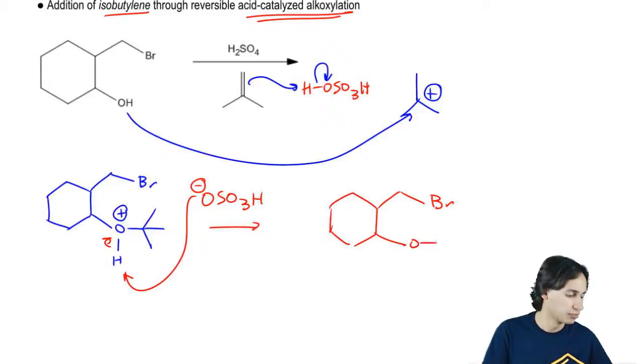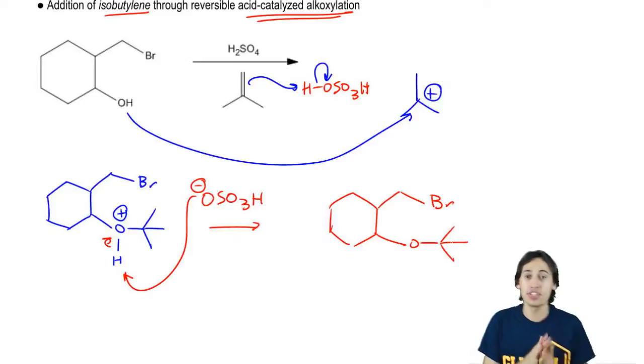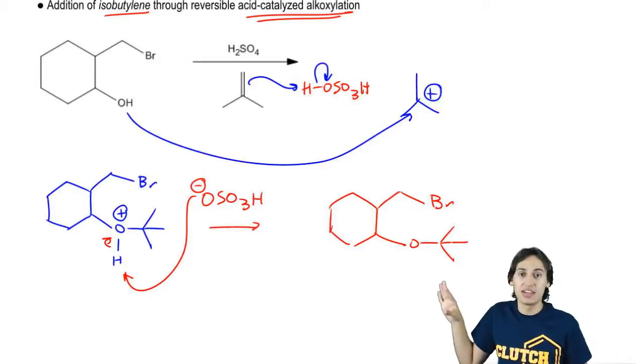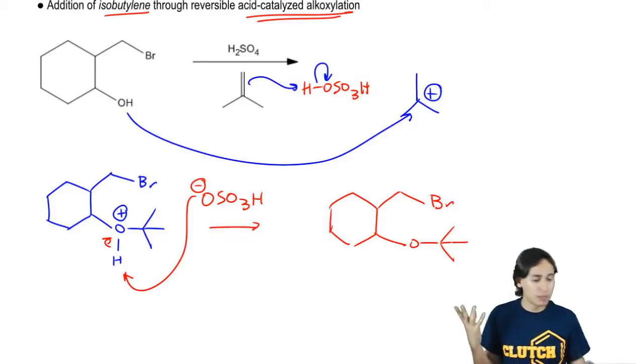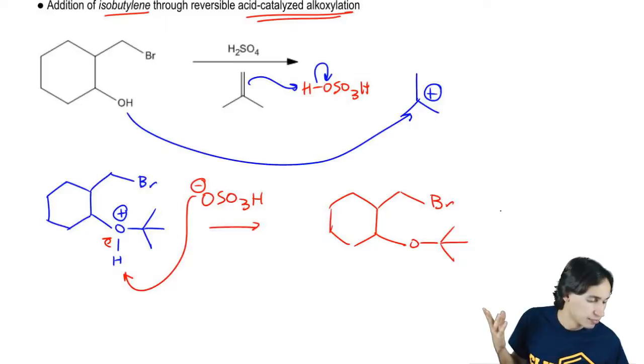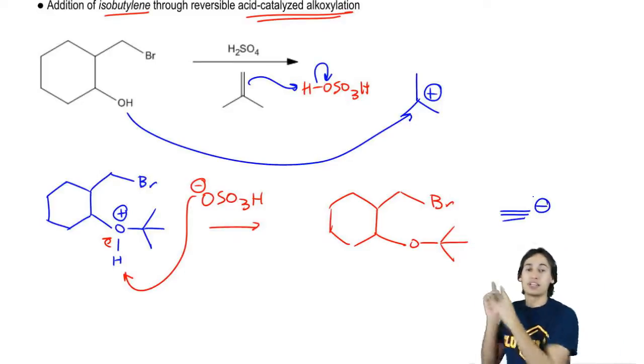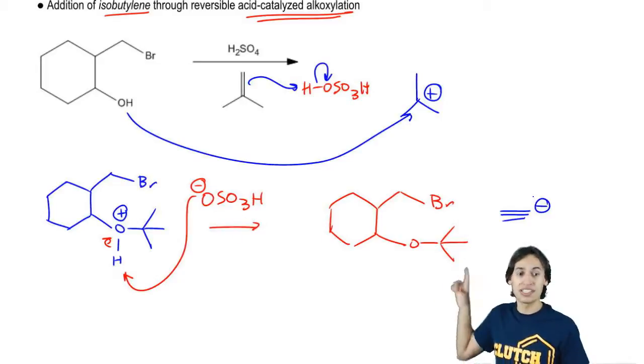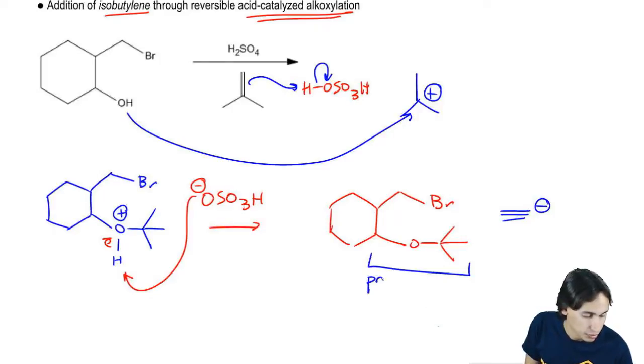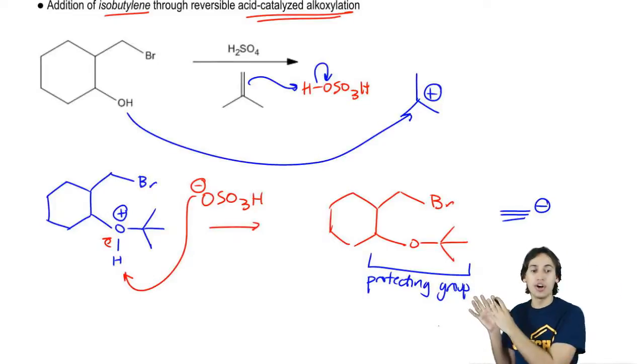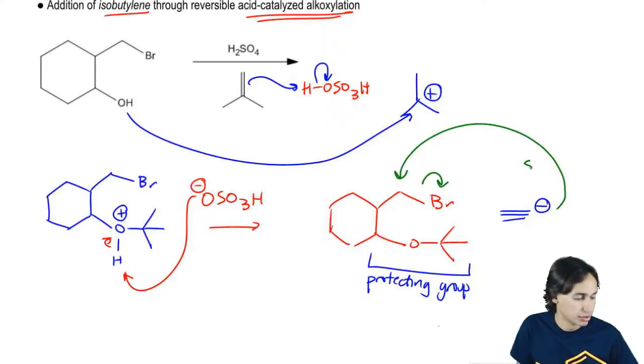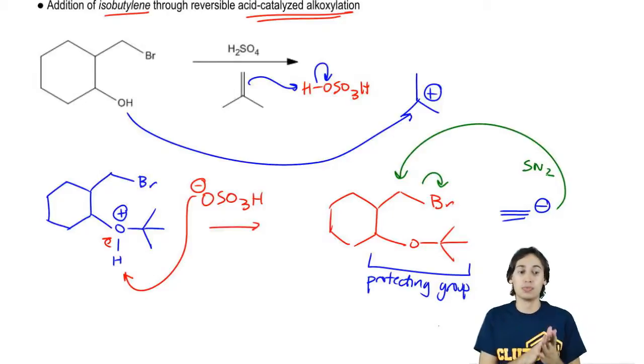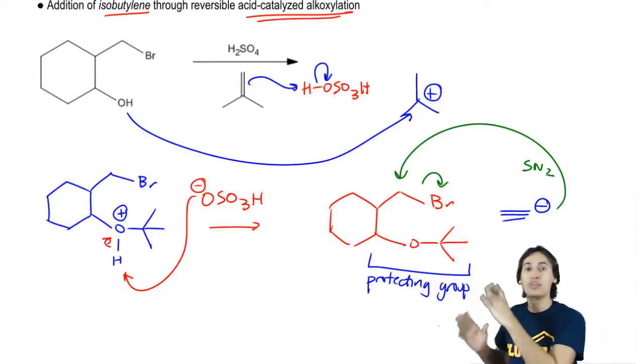Now why do you think this might be helpful? Well, because it turns out that this ether that I'm looking at right here is completely unreactive to strong bases like alkynides. Remember that I said an alkynide would react with an alcohol? It won't react with an ether. So now that means if I were to introduce my alkynide to this molecule after the ether is in place, guess where it's going to react? Not with the ether. The ether is protected now. This is my protecting group. So now what's going to happen is that the only thing that it can possibly react with is my alkyl halide through an SN2 reaction.